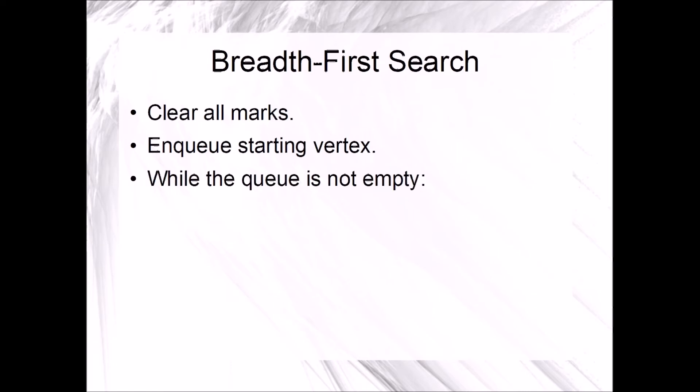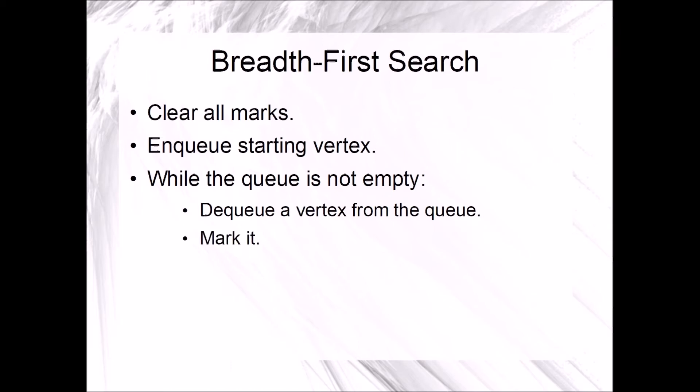The next phase is going to be made up of a loop. So long as the queue is not empty, the algorithm dequeues a vertex from the queue, marks it, and then enqueues all adjacent unmarked vertices.